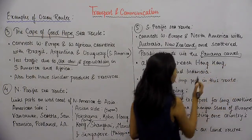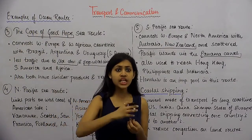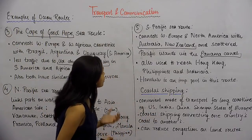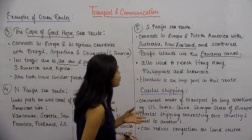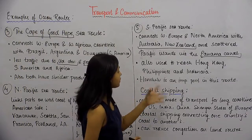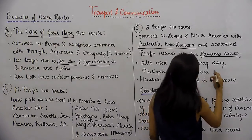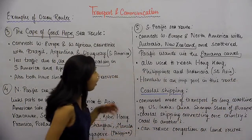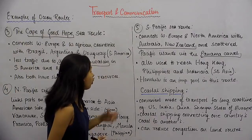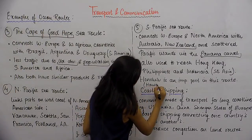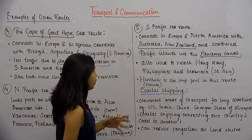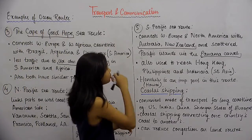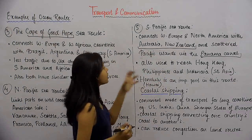This sea route is also used to reach Hong Kong, the Philippines, and Indonesia, which are Southeast Asian countries. Honolulu is an important port in this route — it is the capital of Hawaii — and it falls along the South Pacific sea route, which connects West Europe and North America with Australia, New Zealand, and scattered Pacific islands.